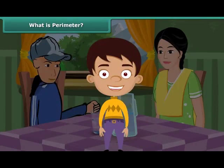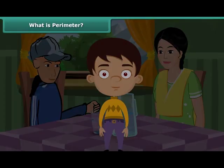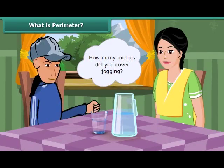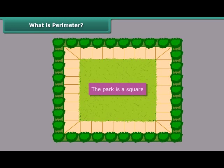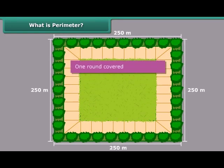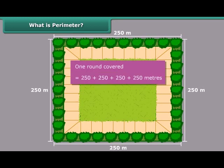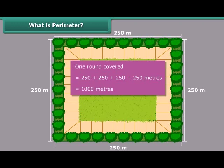Let us now try to answer your mother's question: how many meters did you cover jogging? In every round of jogging, you covered the four sides of the park. Since the park is a square, all its sides are equal. Thus, in one round, you covered 250 plus 250 plus 250 plus 250 meters — that is 1,000 meters.